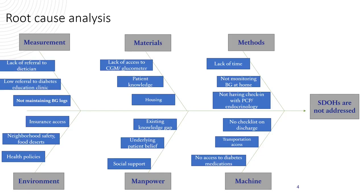We conducted a root cause analysis to understand why these social determinants of health were not being addressed. There were several contributing factors. Environmental factors included lack of insurance or unemployment, neighborhood safety, living in food deserts, and existing health policies. Additionally, the absence of a discharge checklist and poor access to diabetic medications were identified. Some patients also lacked knowledge on how to log their blood sugars daily or maintain close monitoring with their primary care physician or endocrinologist.